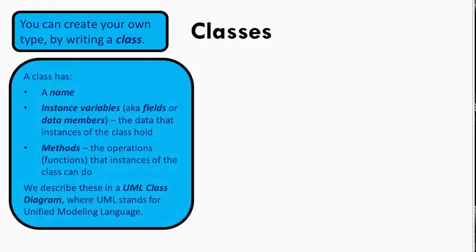A class always has three things: a name, instance variables to hold the data that the instances of the classes have, and methods that instances of the classes can do. For example, consider the point class.